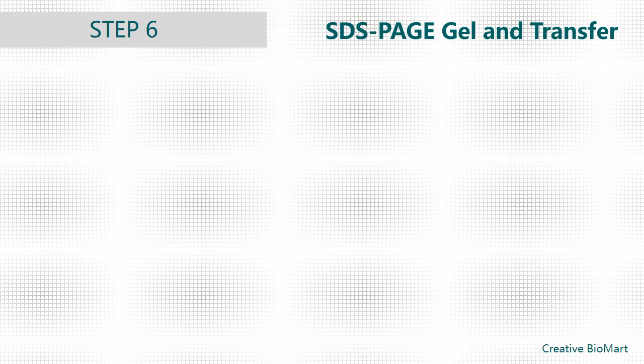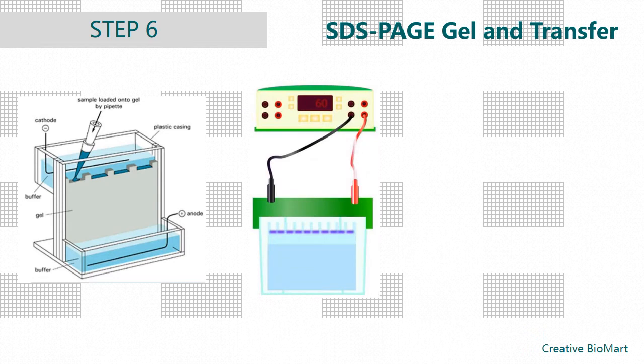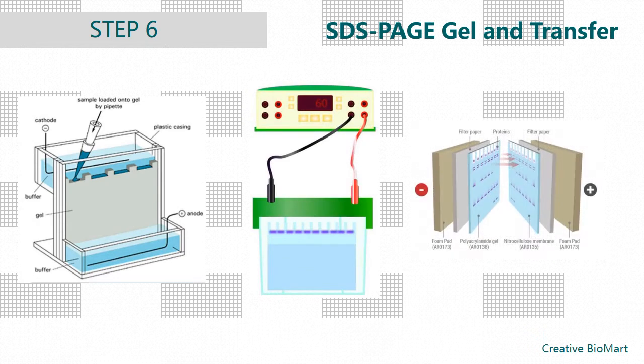Step 6, SDS-PAGE Gel and Transfer. Load 2 wells per tube on a 10% Bis-Tris Gel. Run the gel at 150 volts until the dye front is at the bottom of the gel. After the gel run, transfer gel to a piece of nitrocellulose using the wet transfer apparatus. After the transfer, rinse the NC filter in PBS and gently blot on a napkin to dry. Wrap the membrane in plastic wrap and expose to film.